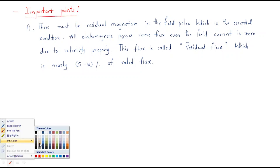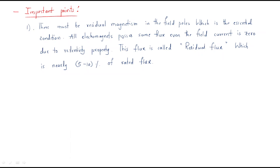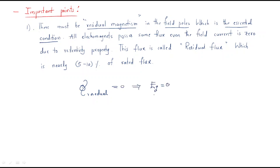The first important point is residual magnetism. There must be residual magnetism in the field poles — this is an essential condition. If the residual magnetism is zero, the EMF generation will definitely be zero.